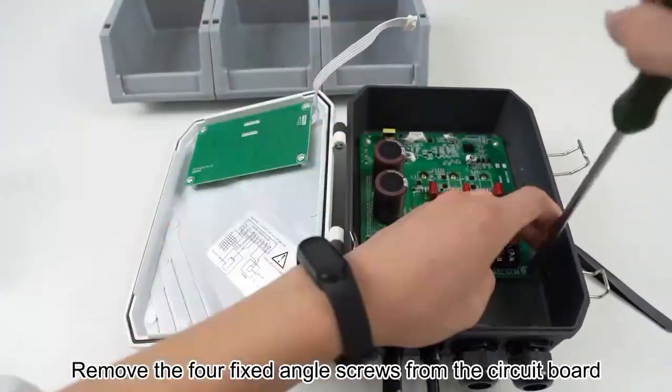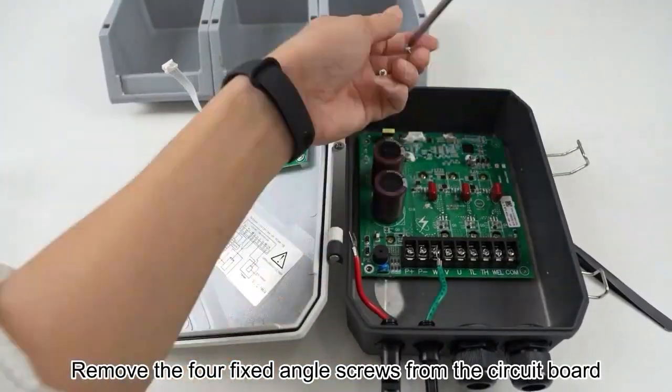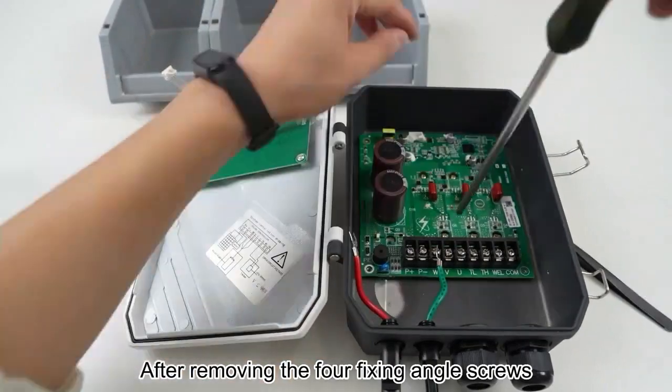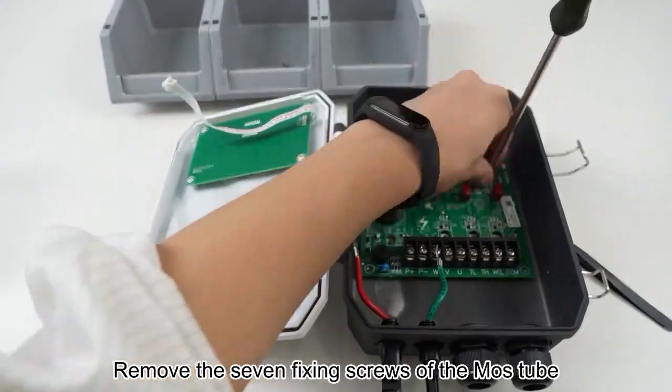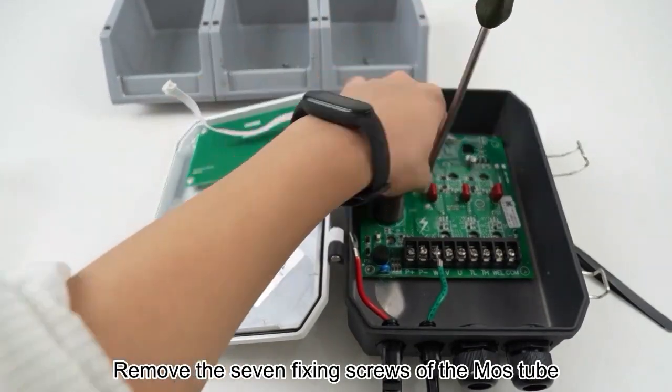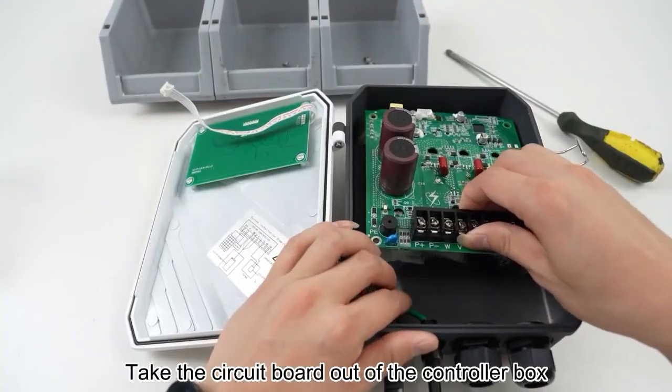Remove the four fixed angle screws from the circuit board. After removing the four fixing angle screws, remove the seven fixing screws of the MOS tube. Take the circuit board out of the controller box.